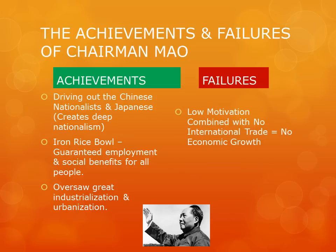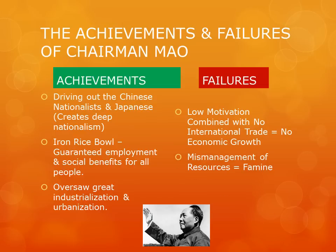But Mao created a system in which there was low motivation to produce, and thus, with being cut off from international trade, the economy did not grow and became stagnant. They also mismanaged most of their resources, including food and agricultural products, leading to widespread famine, particularly during his Great Leap Forward. And there was wide acceptance of harsh authoritarian rule in his reign that is perpetuated into society even today.